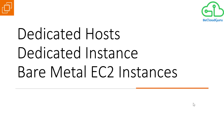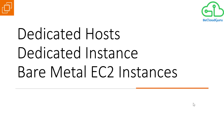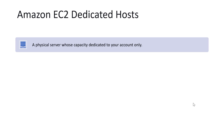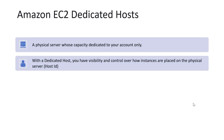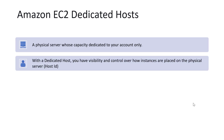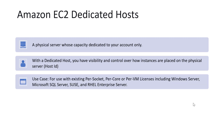Let's talk about these one by one. What is an Amazon EC2 dedicated host? Basically, it's a physical server whose capacity is dedicated to your account only. With a dedicated host you have full visibility as well as control over where you want to place your instances on that physical server, and this can be achieved with the help of something called a host ID.